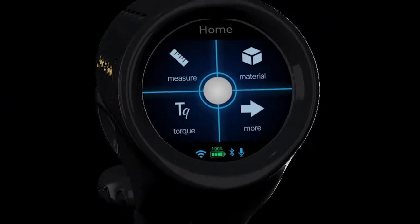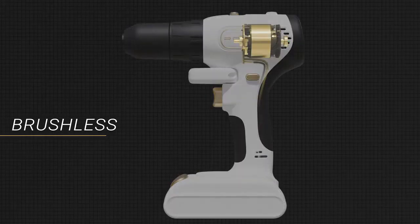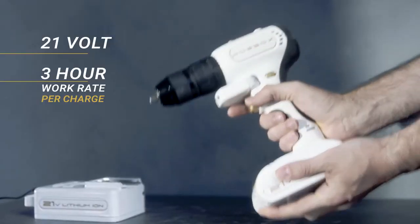X-Drill is first and foremost a terrific drill. Our motor is brushless. The battery is 21 volts with a three-hour work rate per charge.